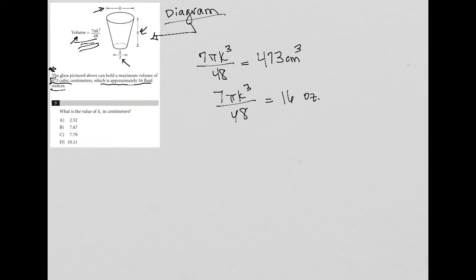Alright, so let's read the actual question. Number nine, what is the value of K in centimeters? So I'm not going to be using this formula because that has ounces involved. Let me just get rid of that. But I will be using what I have here and notice that the only variable, the only unknown is K. So I'm simply solving for K. So let's do that.